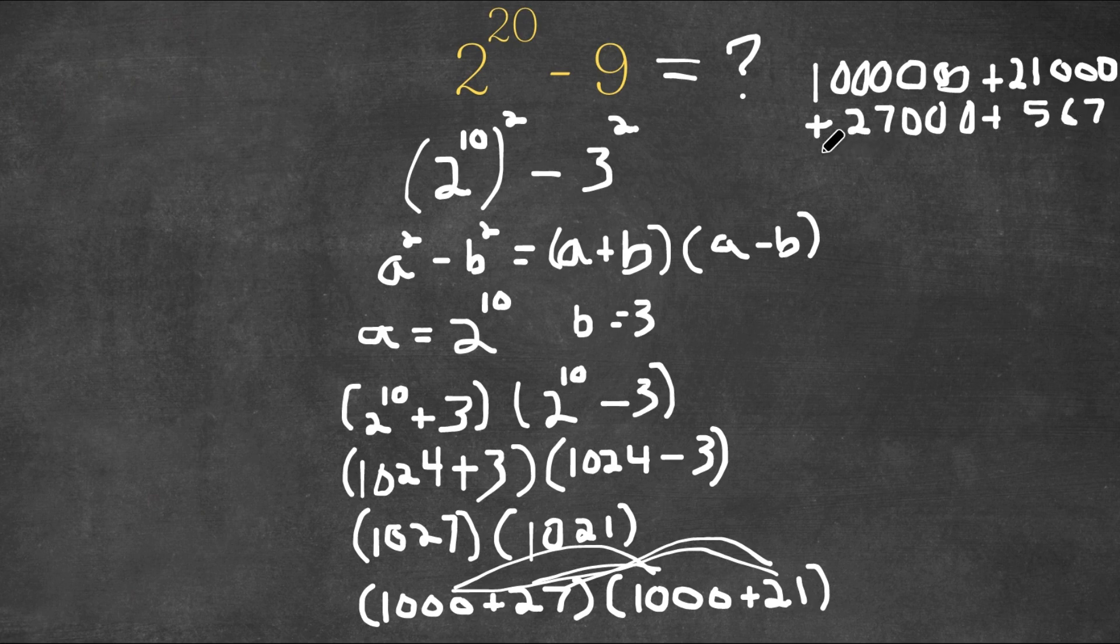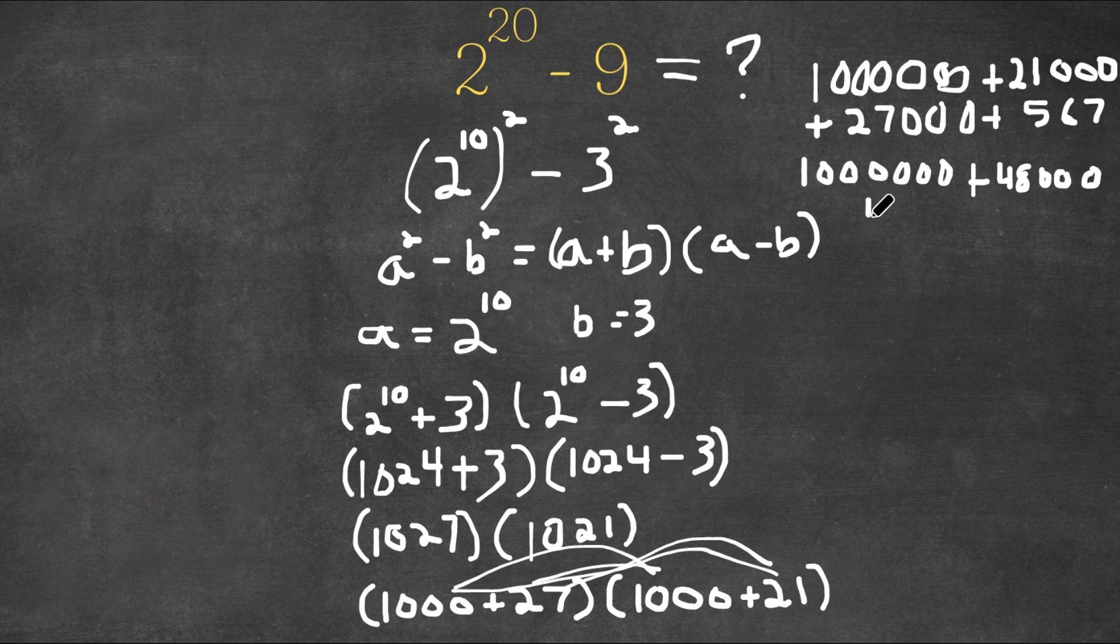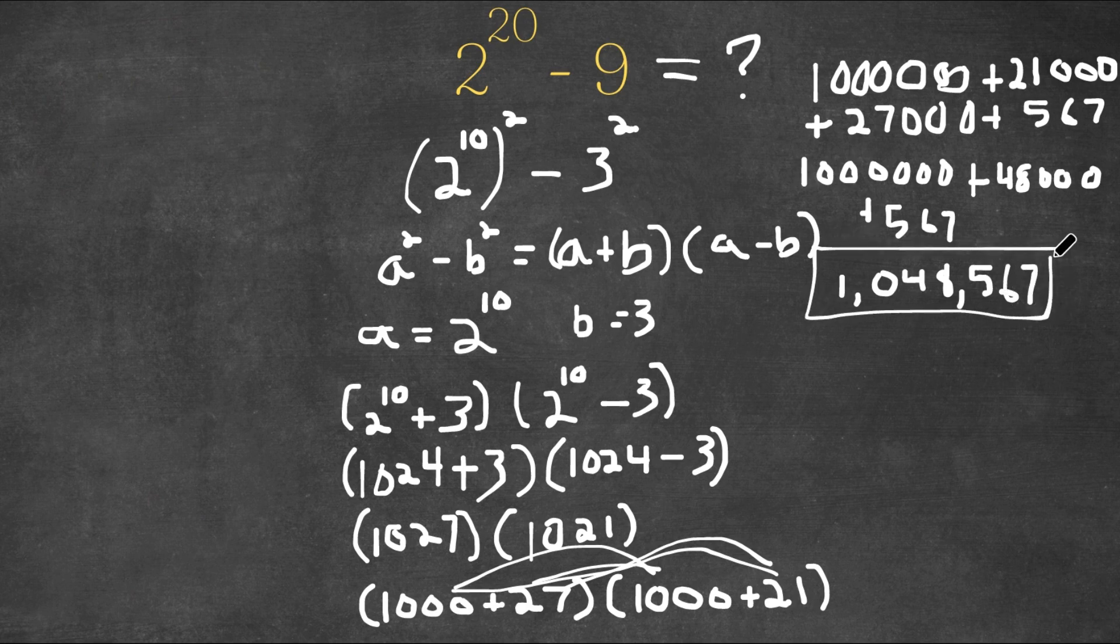So this is equal to 1,000,000 plus 48,000 plus 567, and now this is equal to 1,048,567. So this is our answer.